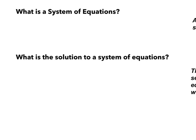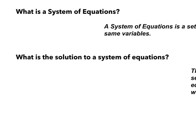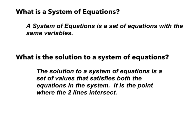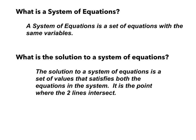Now that we have reviewed how to graph an equation in slope-intercept form, let's talk about using graphing to solve a system of equations. A system of equations is simply a set of equations that are using the same variables. The solution to a system of equations is a set of values that satisfies both equations in the system — quite simply, it's the point where the two lines intersect.